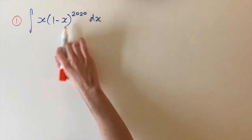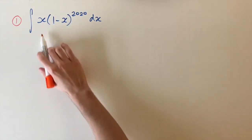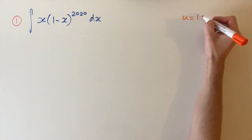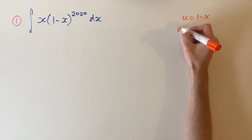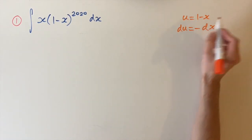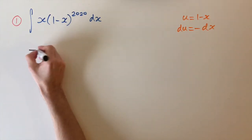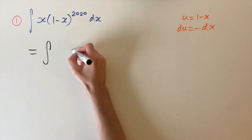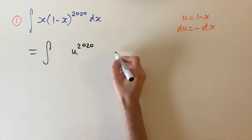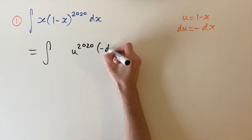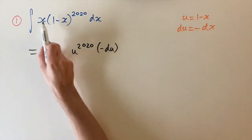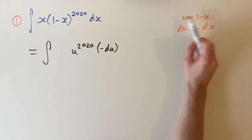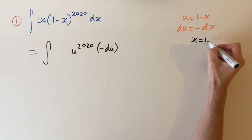We want to simplify this bracket. We don't want to expand out all the brackets. One way to simplify this is to let this term be u. So if we let u equal 1 minus x and differentiate, we have du equals minus dx. The (1 minus x) turns into u to the power of 20, and the dx turns into minus du. We also need to express the x term in terms of u, which we get by rearranging: x equals 1 minus u.